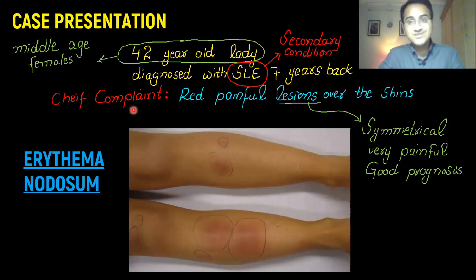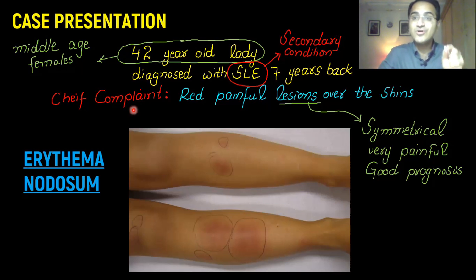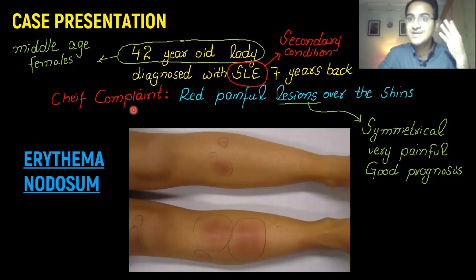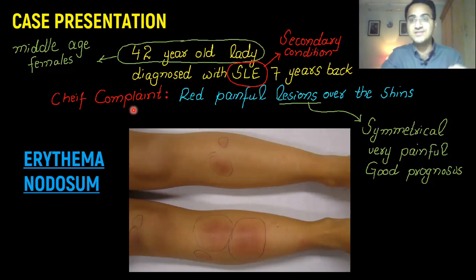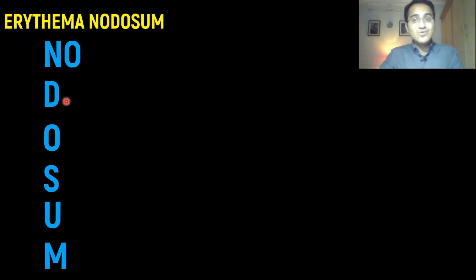Whenever a patient presents with erythema nodosum, what's most important is that you search out the underlying cause — what is the condition behind it, what is the secondary disease process in the patient that is manifesting itself in the form of erythema nodosum.